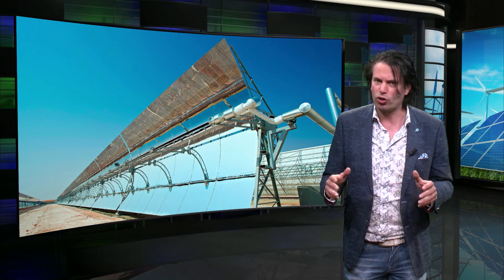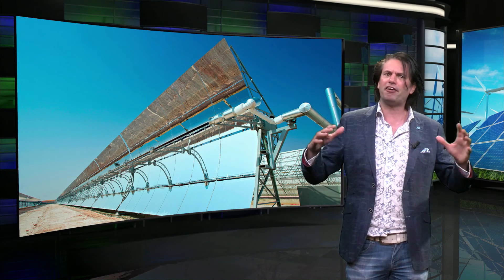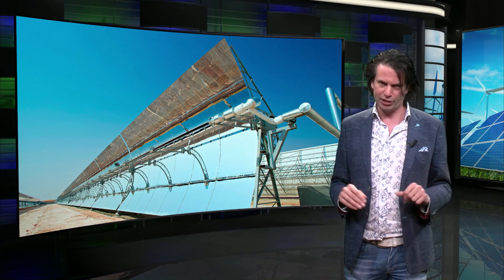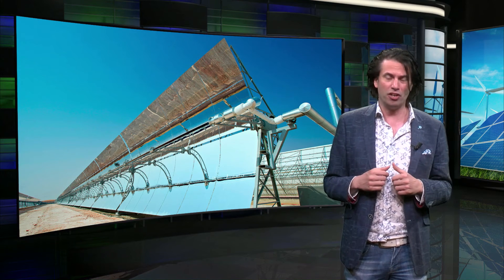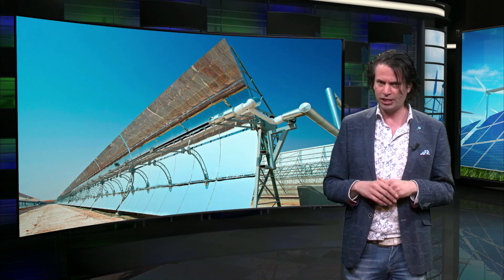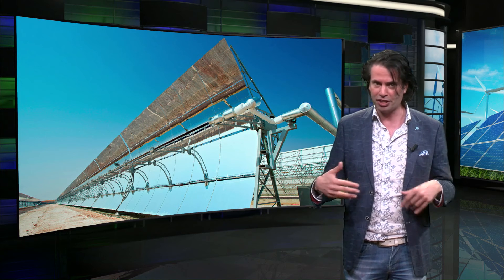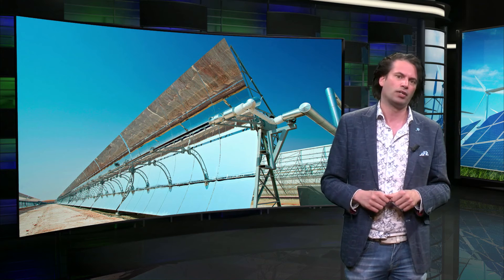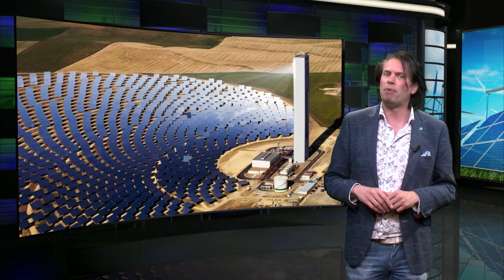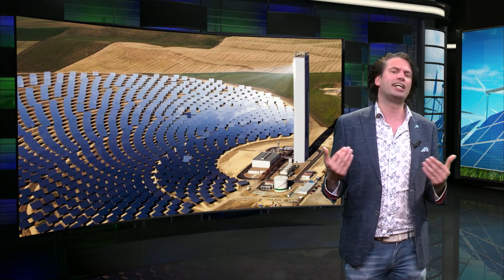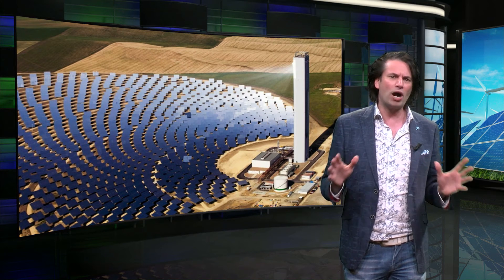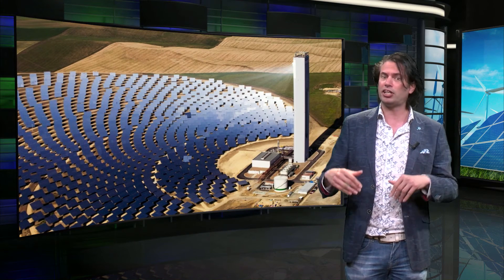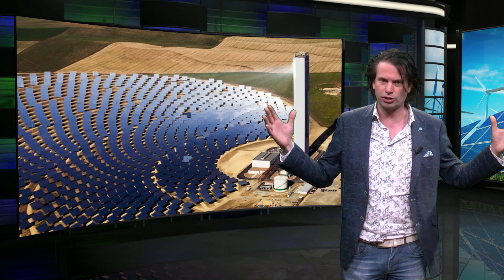Parabolic solar concentrators use a large area of mirrors to concentrate light to a very small tube. The liquid in these tubes can get hot enough to boil water, and a conventional steam turbine can then be used to generate electricity, which can be used for more purposes than only heating. Concentrated solar power towers have also existed for a couple of decades and are becoming more and more economically feasible without subsidies. They use the same principles as parabolic mirrors, only at a much larger scale.